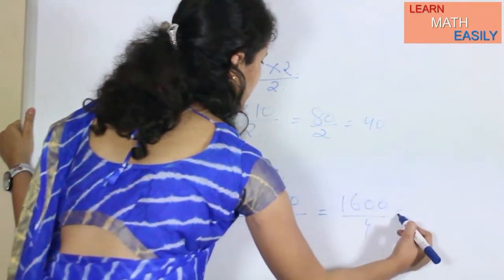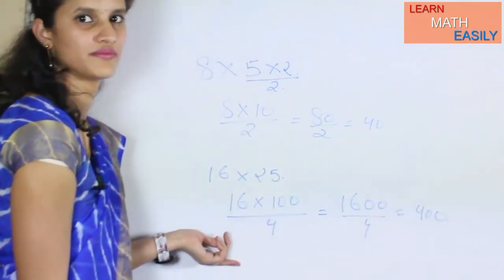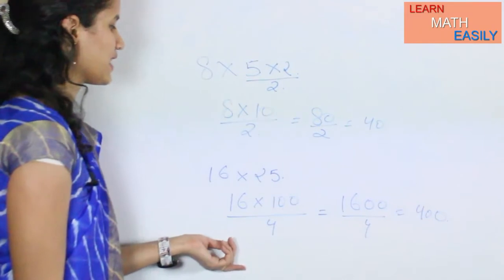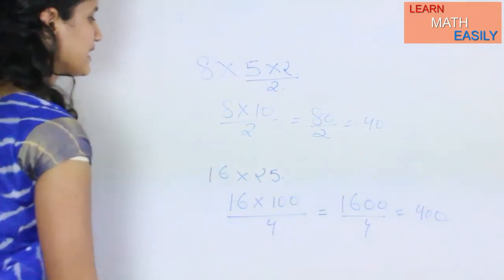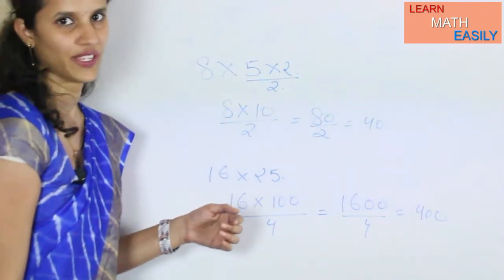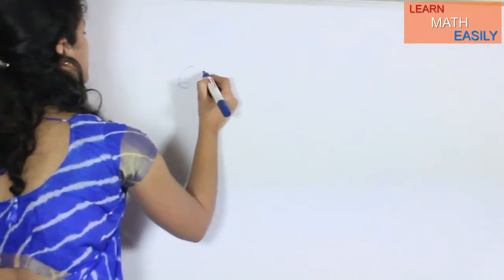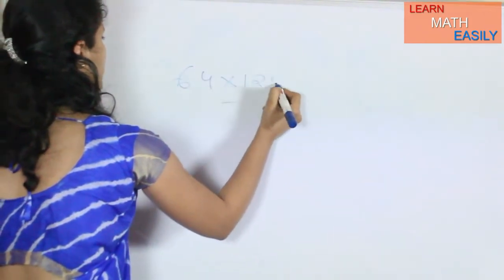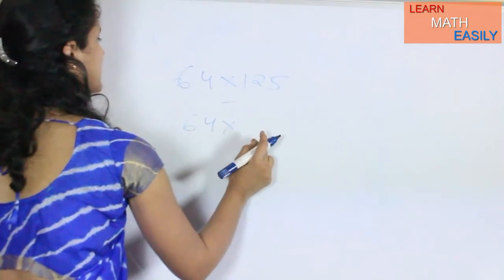In the same way, if someone asks us to multiply any number with 125, suppose I have to multiply 64 into 125, what will I do is multiply 64 into 1000 divided by 8.